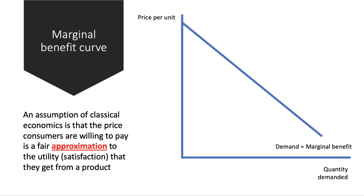An assumption of classical economics is that the price you're willing to pay is a fair approximation to the utility you get. Hence the demand curve becomes the marginal benefit curve, which is an approximation to the marginal utility curve.